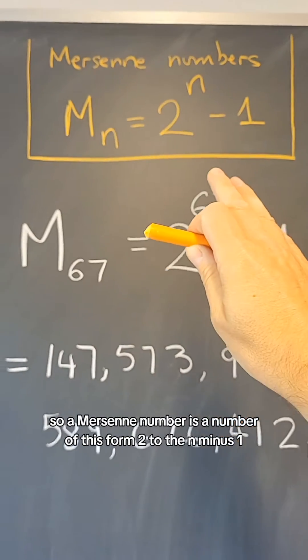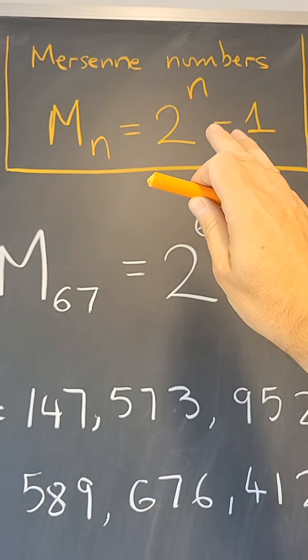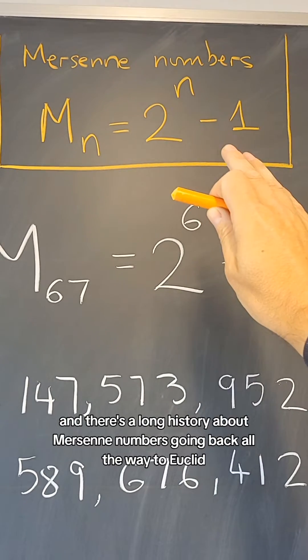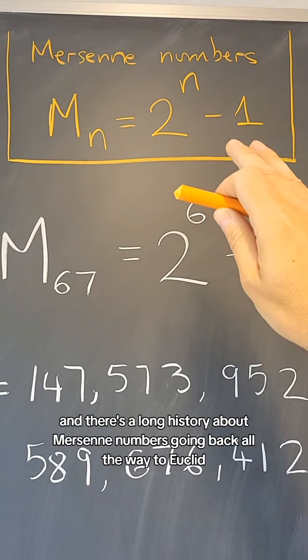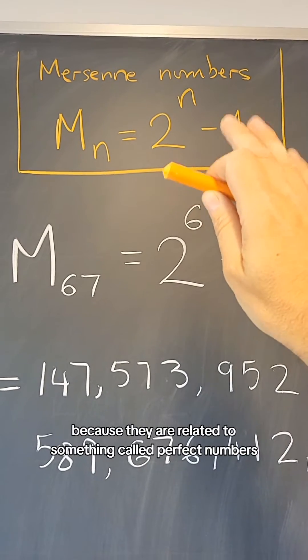So a Mersenne number is a number of this form, 2 to the n minus 1 for some exponent n. And there's a long history about Mersenne numbers going back all the way to Euclid because they are related to something called perfect numbers.